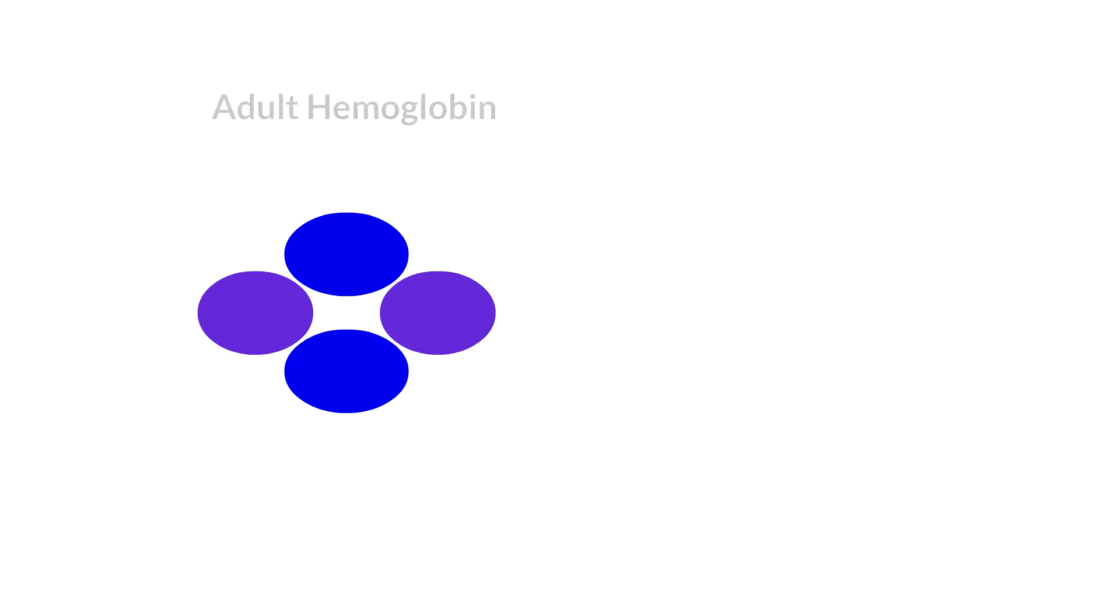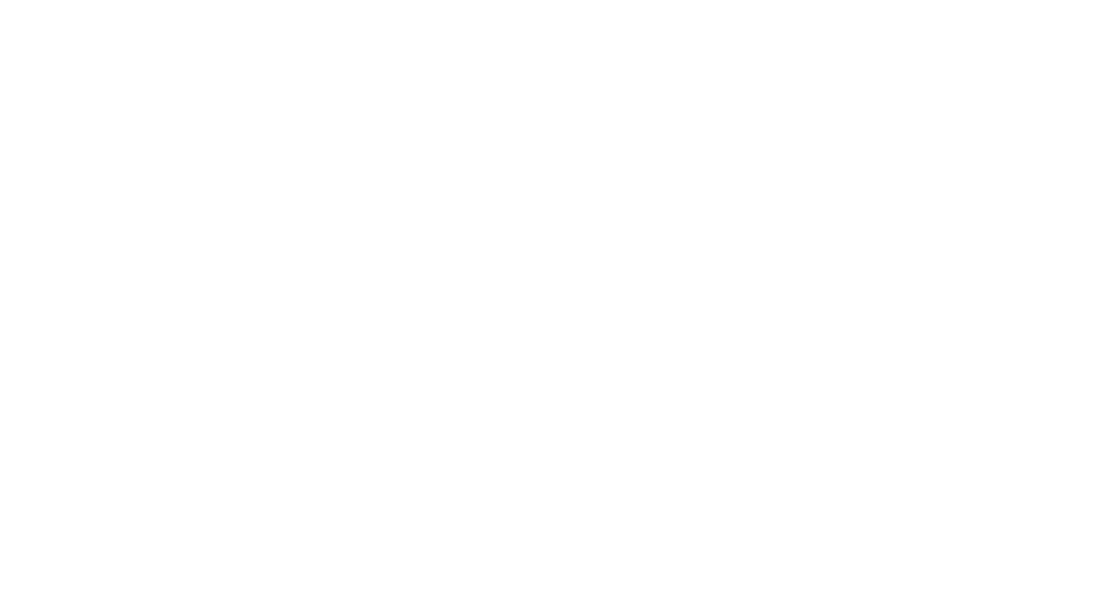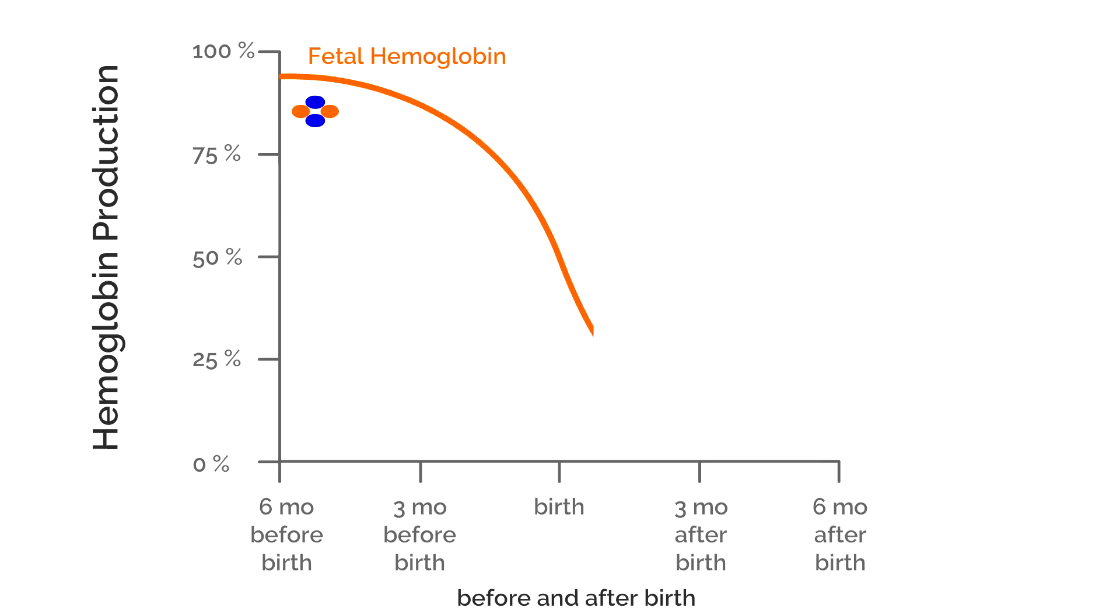Another approach to sickle cell gene therapy involves reactivating production of fetal hemoglobin. In fetal hemoglobin, the function of beta-globin protein is performed by another molecule called gamma-globin. Gamma-globin is produced in human fetuses and in newborn babies. Six months after birth, production of gamma-globin drops.